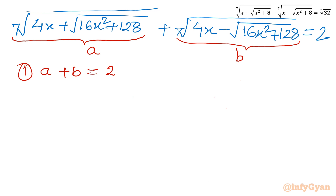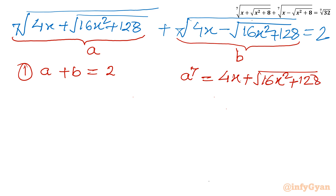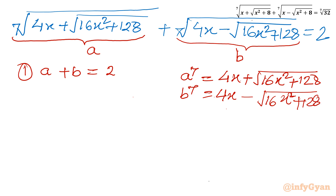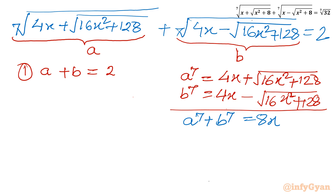For the second equation, using the substitution: a to the power 7 equals 4x plus the square root of (16x squared plus 128), and similarly b to the power 7 equals 4x minus the square root of (16x squared plus 128). Adding both equations gives a to the power 7 plus b to the power 7 equals 8x — this is equation number 2.